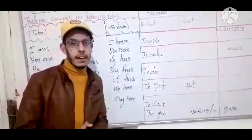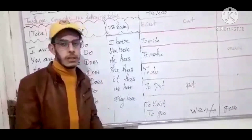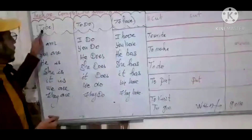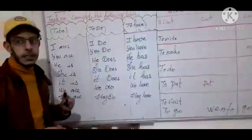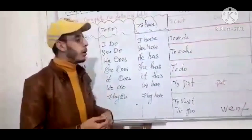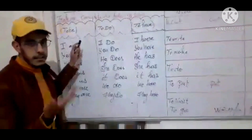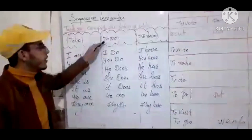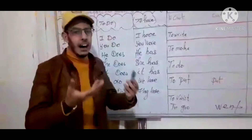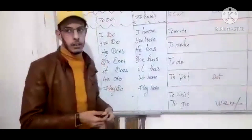This is for the fourth year. We will start with the verb 'to be,' the verb 'to do,' and the verb 'to have.'